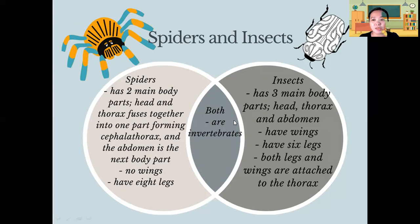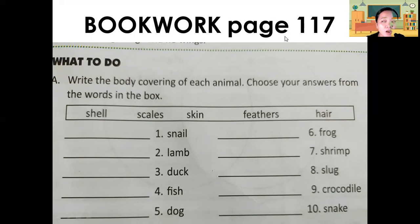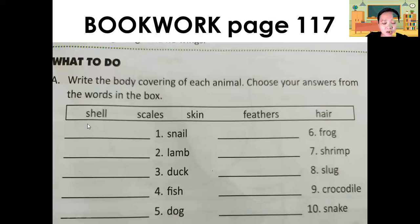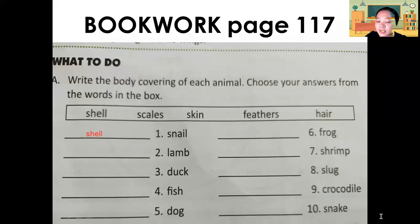I hope you learned something about our lesson today. Now let's have our book work — please open your science book on page 117. You are going to find out the body covering of each animal. Choose your answer from the words in the box: shell, scales, skin, feathers, and hair. For number one, the snail — the body covering of a snail is a shell.